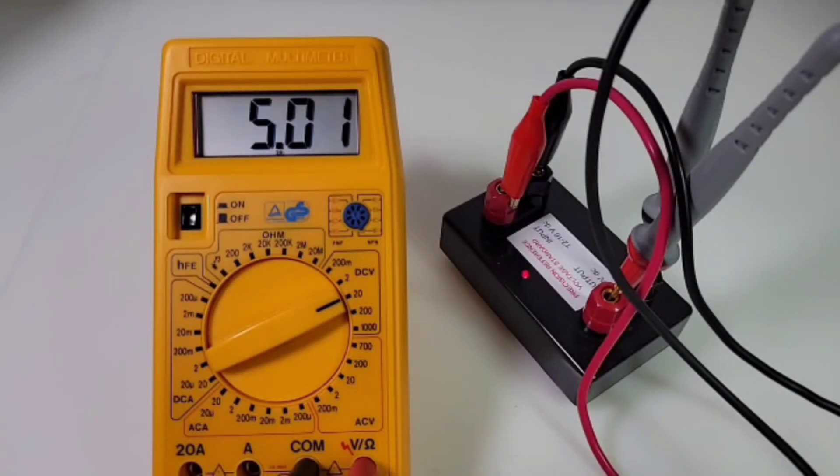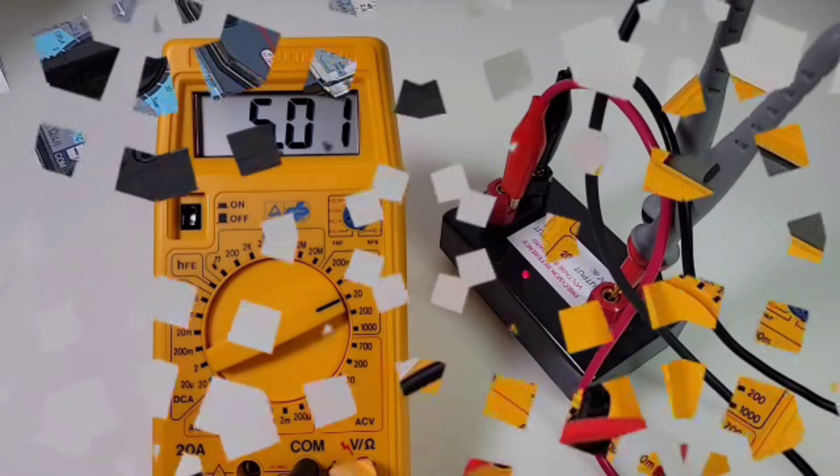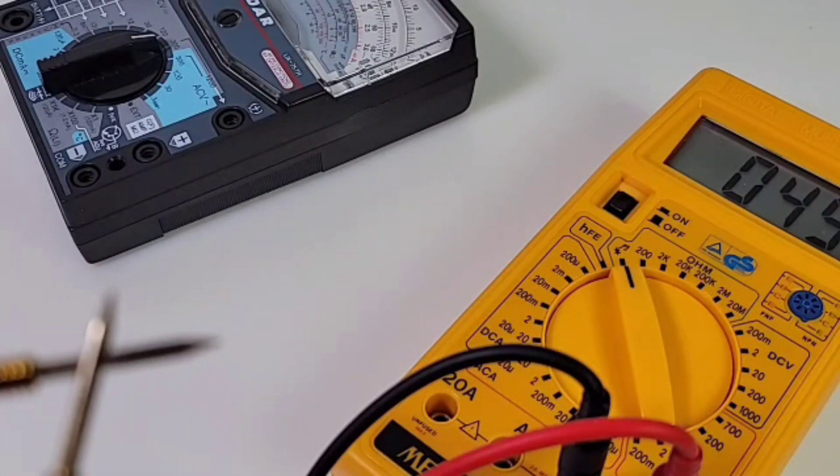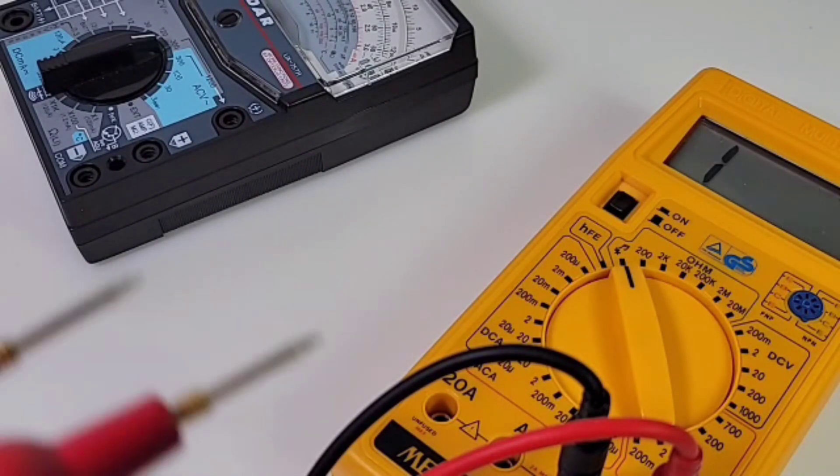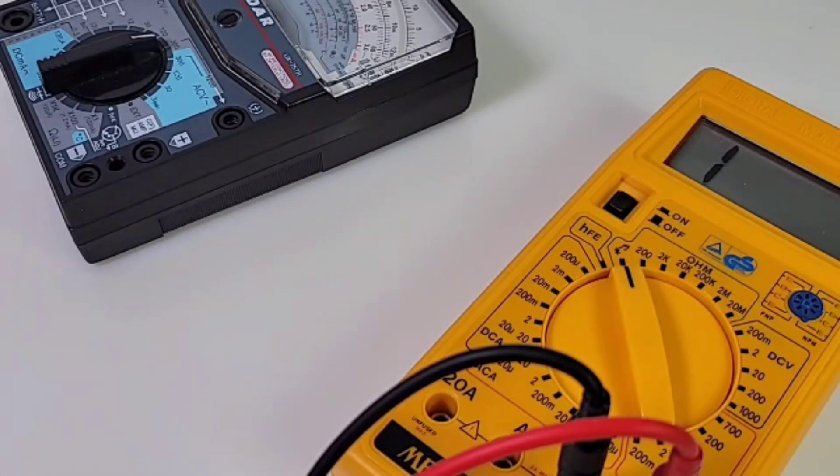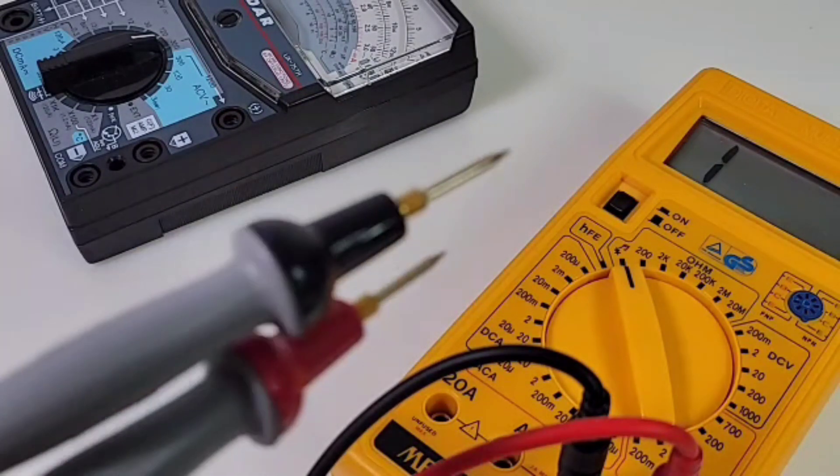DC accuracy test now and 5.01 volts, almost perfect. 5.00, just like that is what we want to see. So all these years later, it's still very accurate and trying out that continuity. Oh yes. With those pro masters, it's latched and loud and fast. Good stuff.